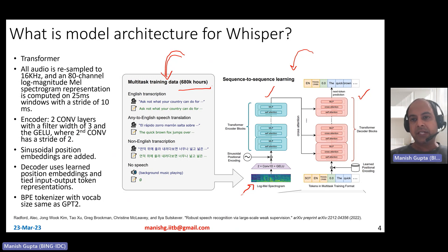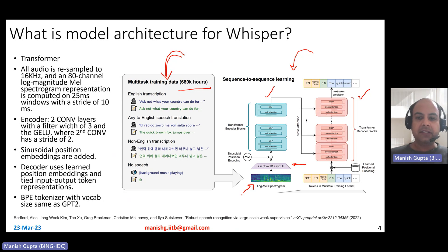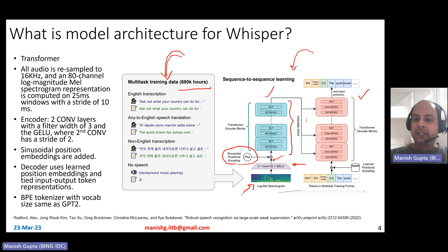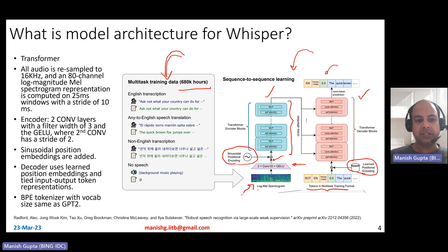The spectrogram is not passed directly to the transformer — there is a stem: a two-convolutional-layer encoder with a filter width of 3 and GELU activation, where the second convolution layer has a stride of 2. The output is then combined with sinusoidal position encodings and fed to the transformer's encoder layers. On the decoder side, learned position encodings are used, and input-output token representations are shared. A BPE tokenizer is used with the same vocabulary as GPT-2's BPE vocabulary, though GPT-2's vocabulary is English-only while Whisper handles multiple languages.